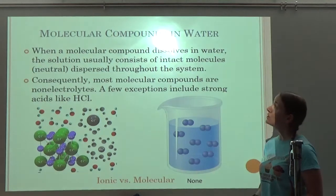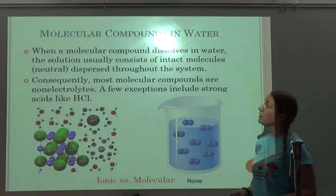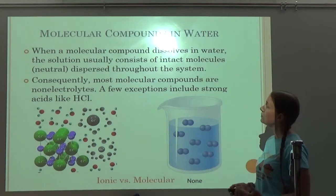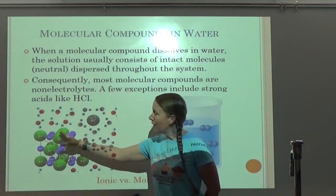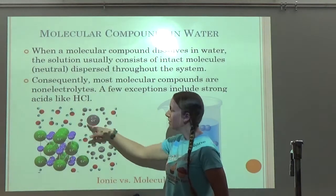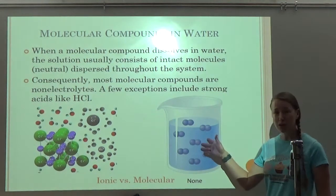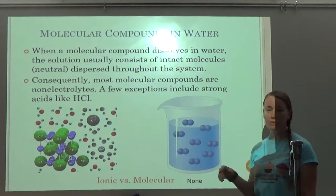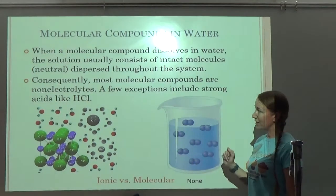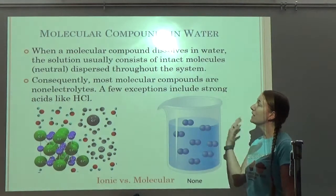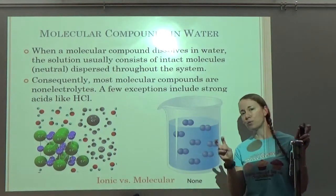When a molecular compound dissolves in water, the solution usually consists of intact molecules, which are neutral, dispersed throughout the system. Consequently, most molecular compounds are non-electrolytes. A few exceptions include strong acids like HCl. If you have an ionic compound, the water molecules will surround the ions and they can move to conduct electricity. Most molecular compounds have neutral molecules floating around, and neutral doesn't help conduct electricity. However, a few exceptions include strong acids — we'll talk a bit about strong acids and strong bases in this chapter.